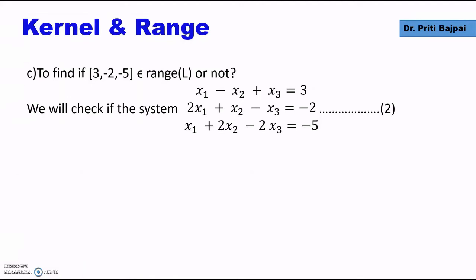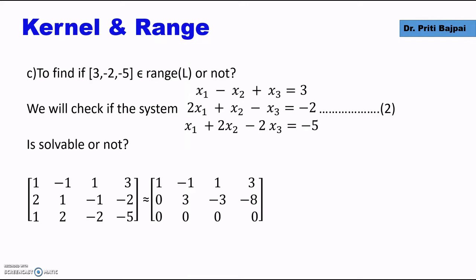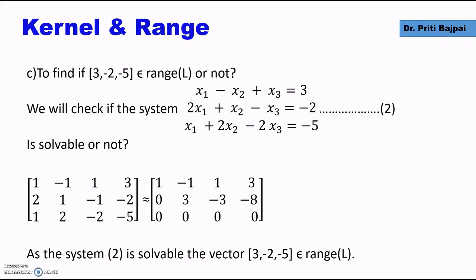To check if (3, -2, -5) belongs to the range of L or not, we will solve the system with the right-hand side as (3, -2, -5). As we know, range of L is the set of all images. So if we can find x₁, x₂, x₃ — that is, if the system is solvable — then we say it belongs to the range. We form an augmented matrix and do row echelon form. The system is solvable and has infinite solutions, so (3, -2, -5) belongs to range L.